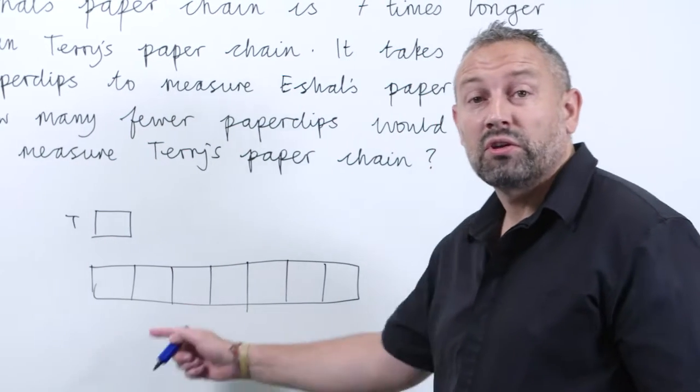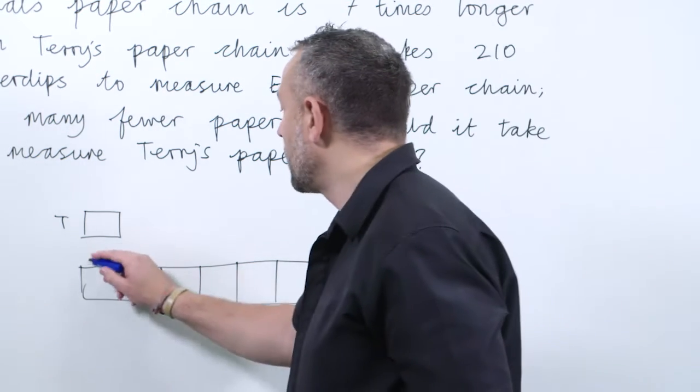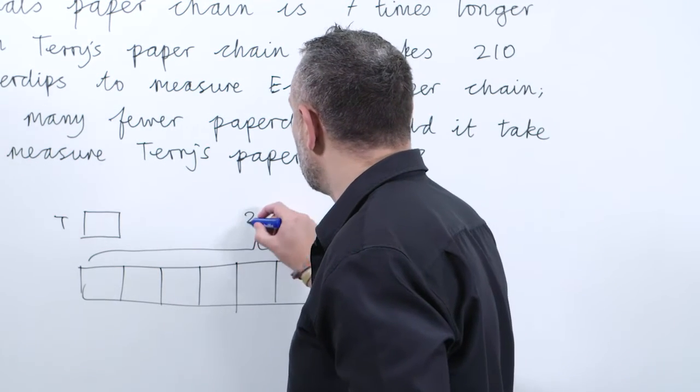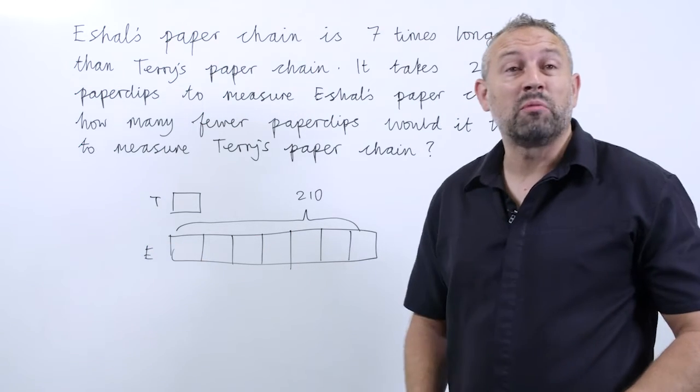It's really important to make sure that each part is fairly proportional, as that helps with the understanding. Now we know that Eichel's paper chain is 210 paper clips long.